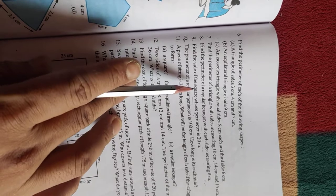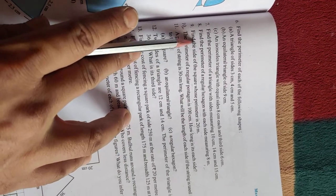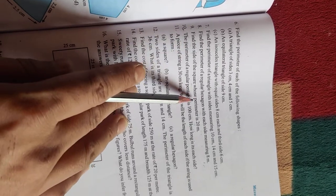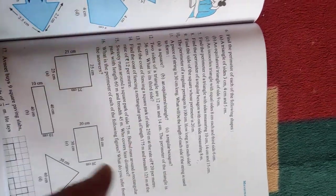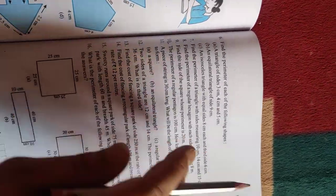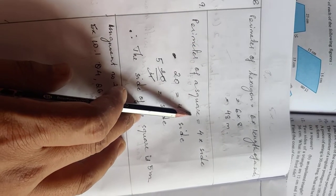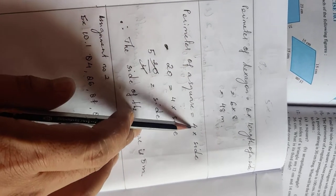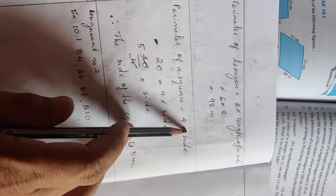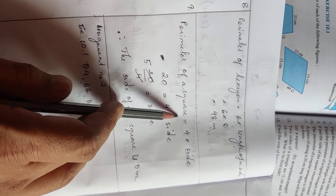Number nine: find the side of the square whose perimeter is 20 meters. Here in this question we have to find the side of the square. The question gives us the perimeter. The perimeter of a square formula is 4 times the side. We don't know the side, but the perimeter of the square is 20.